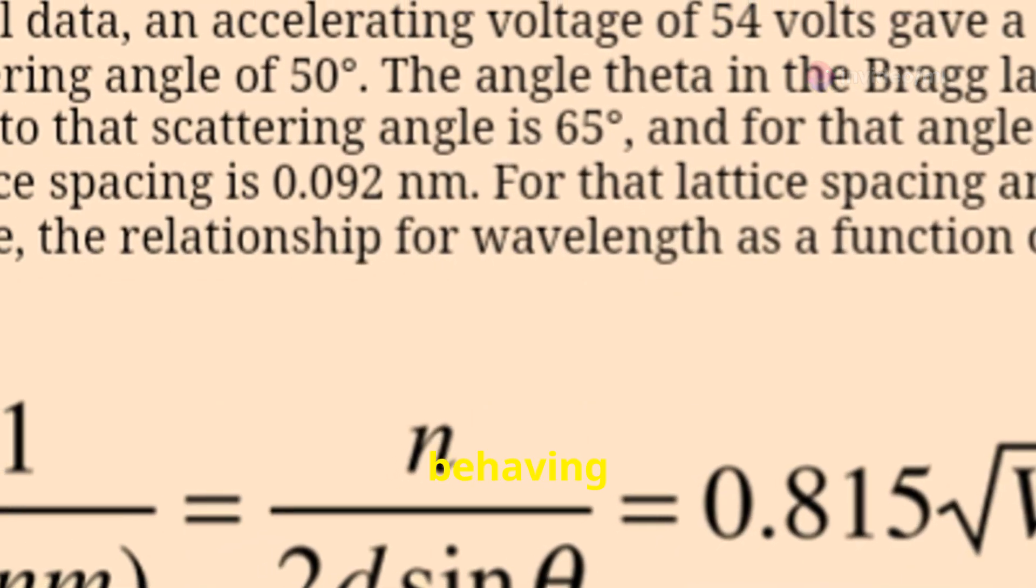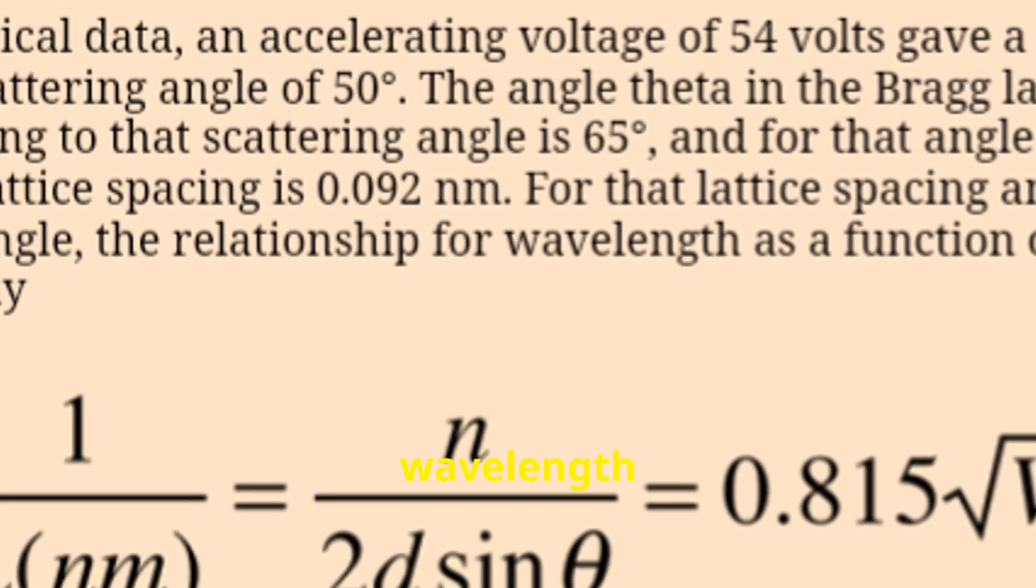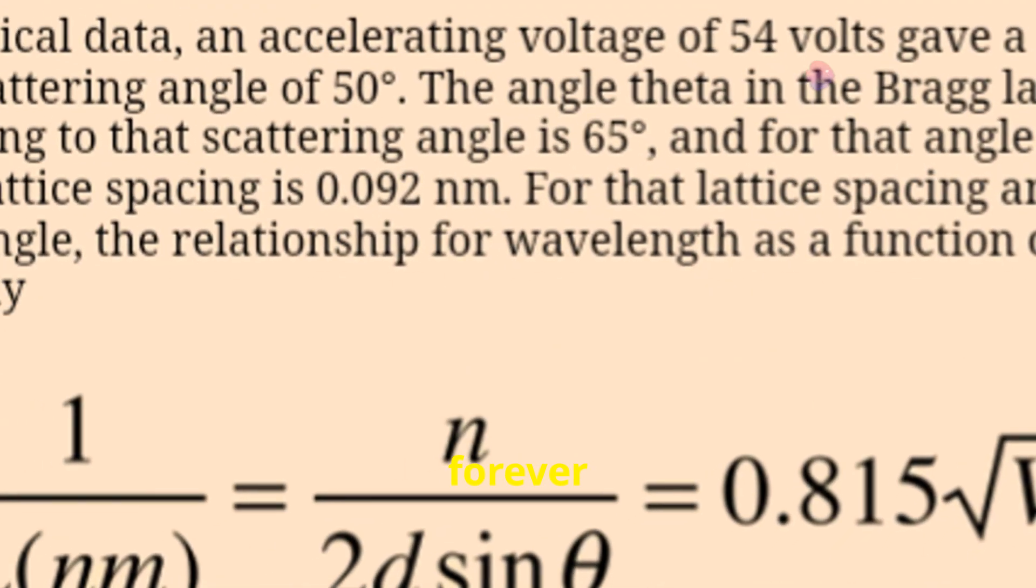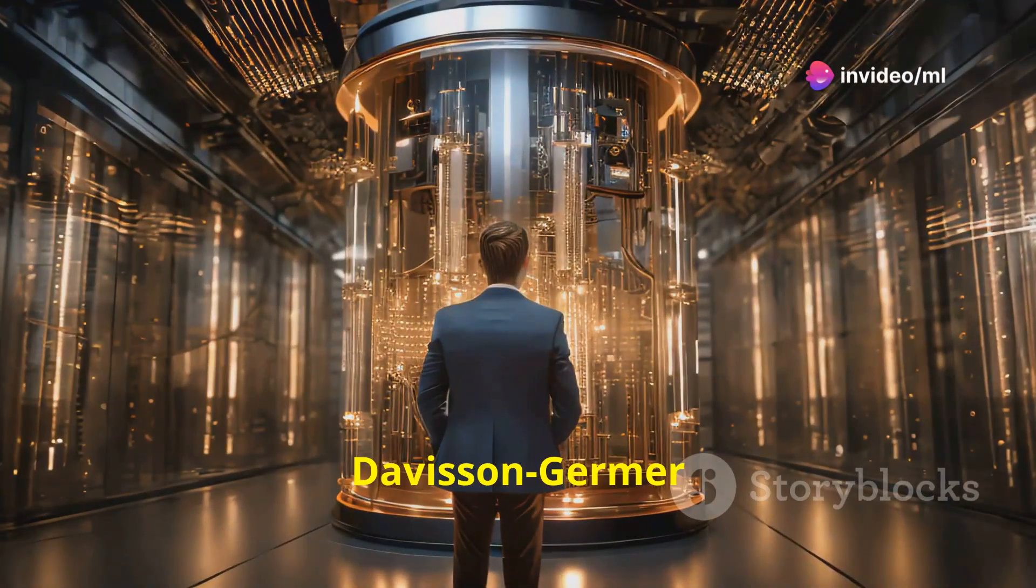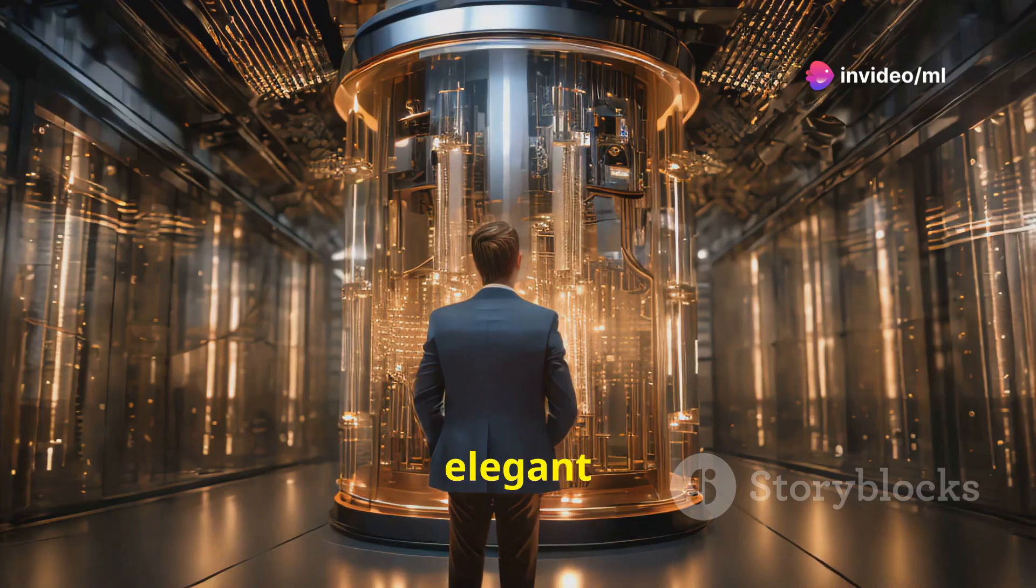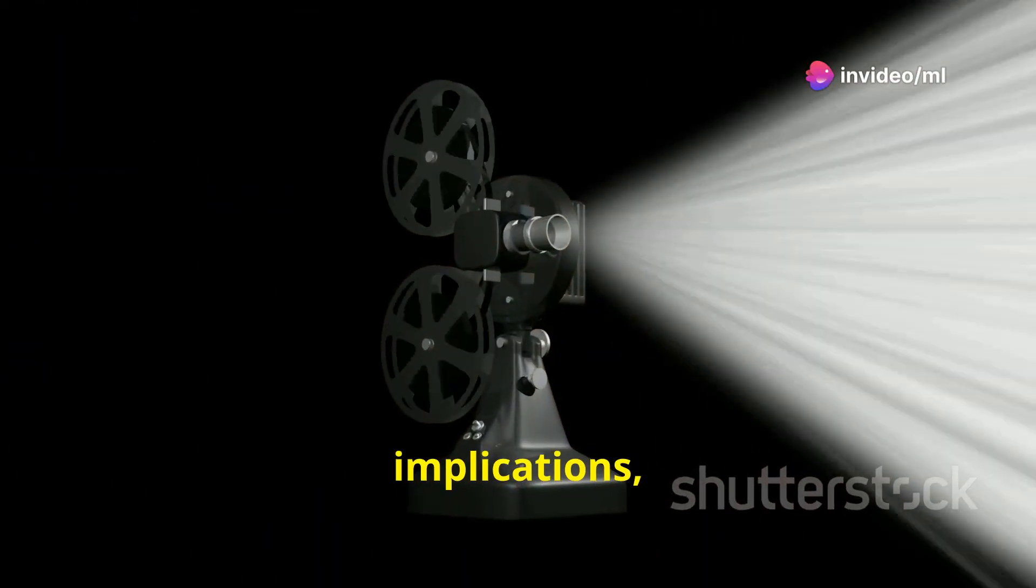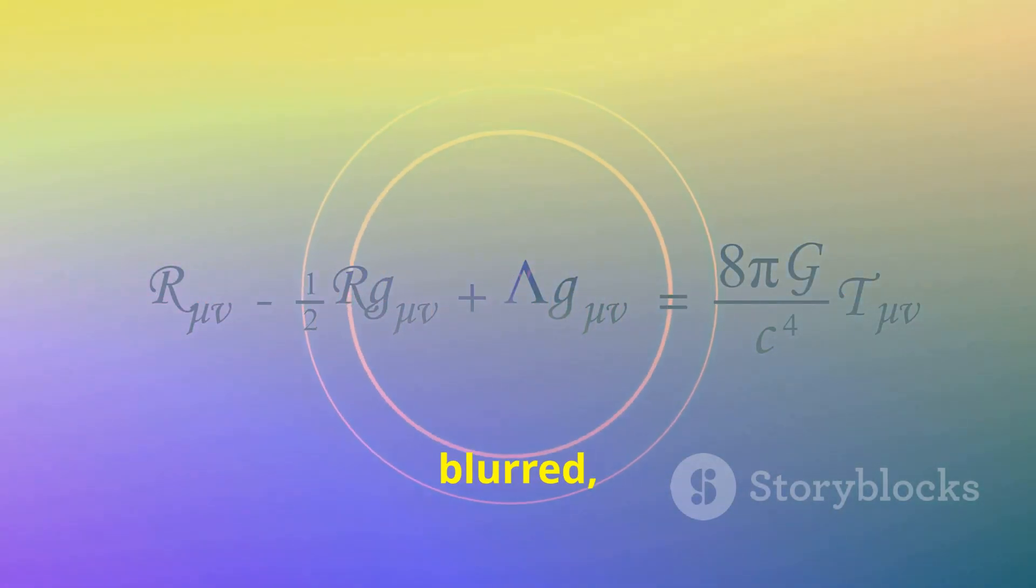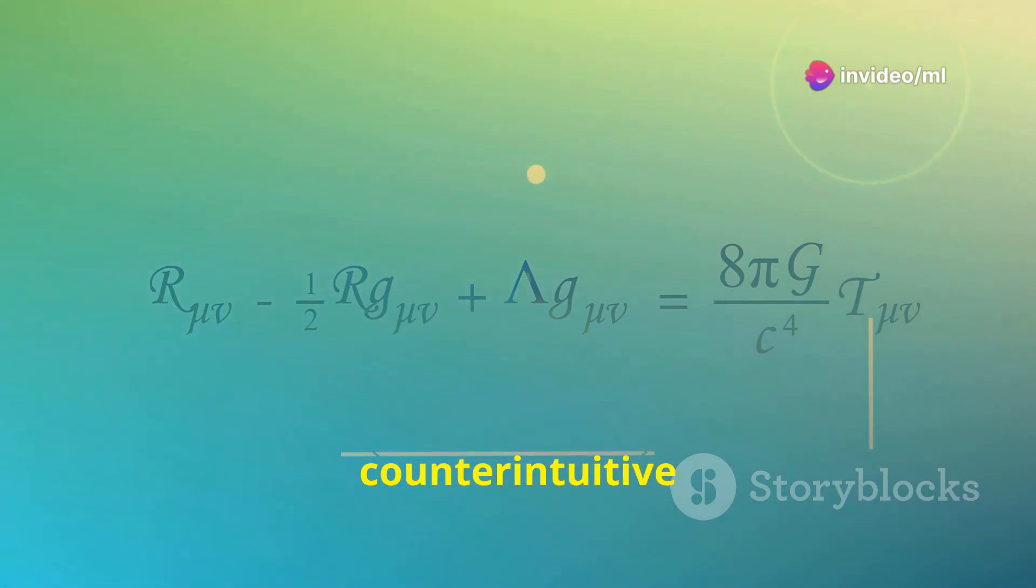The electrons were indeed behaving like waves, with a wavelength determined by their momentum. The world of physics was forever changed. The Davison-Germer experiment, through its elegant simplicity and profound implications, had ushered in a new era of quantum mechanics, where the distinction between waves and particles became blurred, and the subatomic world revealed its astonishing and counterintuitive nature.